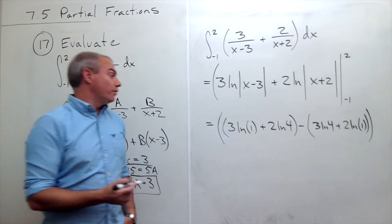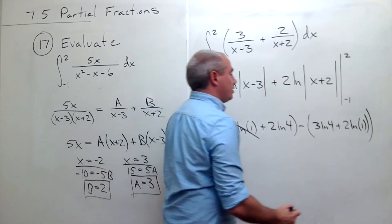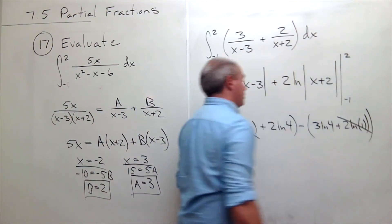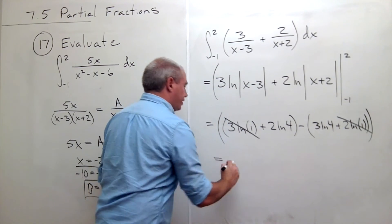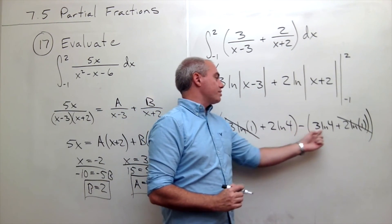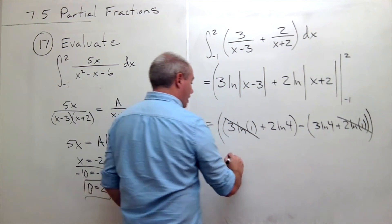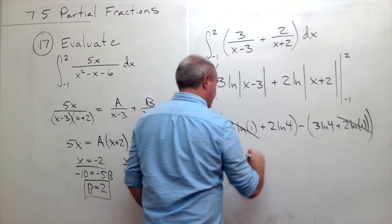Well, ln of 1 is 0. So this term is just gone. And this term is just gone. So all that I'm left with here is 2 ln of 4 minus 3 ln of 4, which is minus 1 ln of 4.